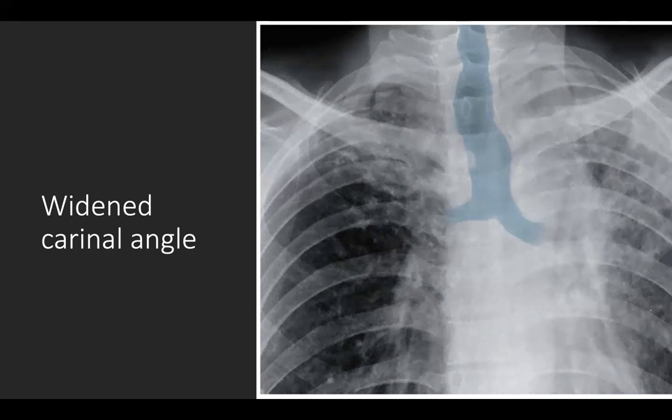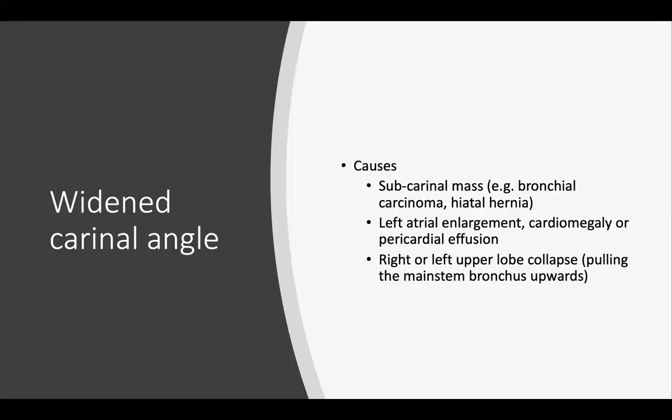In this photo, the trachea and the left and right main stem bronchi are highlighted in blue. Note that the carinal angle is greater than 100 degrees. Possible causes of a widened carinal angle are a subcarinal mass such as bronchial carcinoma or hiatal hernia, left atrial enlargement, cardiomegaly, pleural effusion, or right or upper left lobe collapse pulling the main stem bronchus upwards.